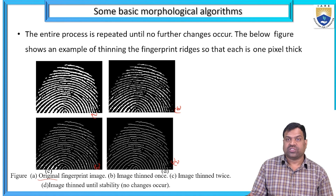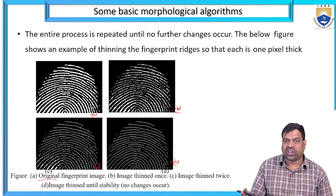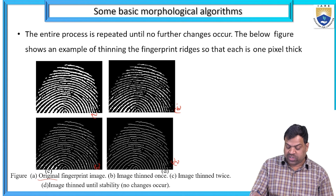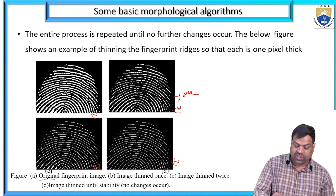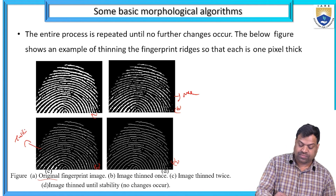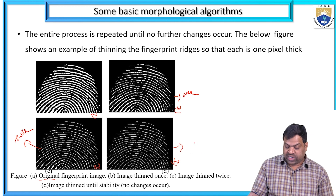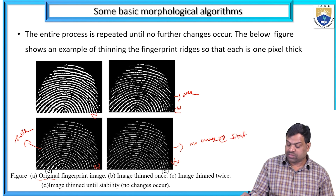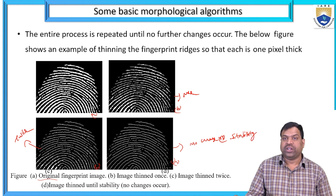Figure A is the original fingerprint image, B is the image thinned once, C is the image thinned twice, and D is the image thinned until stability — no further changes occur. The example of thinning a fingerprint shows the original fingerprint image, then the image thinned once, thinned twice, and finally thinned to stability with no change.